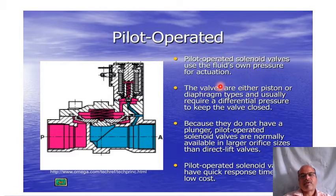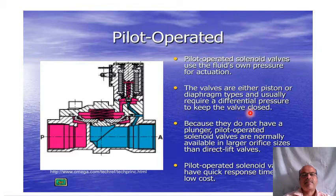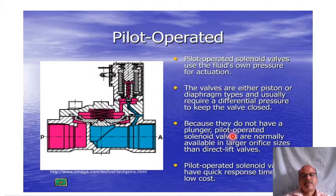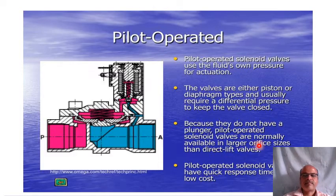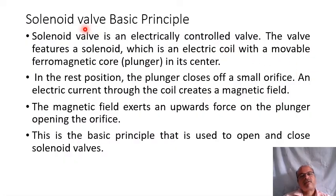Pilot operated solenoid valves use the fluid's own pressure for activation. The valves are either piston or diaphragm type and usually require a differential pressure to keep the valve closed. Because they do not have a plunger, pilot operated solenoid valves are normally available in larger sizes than directly operated valves.